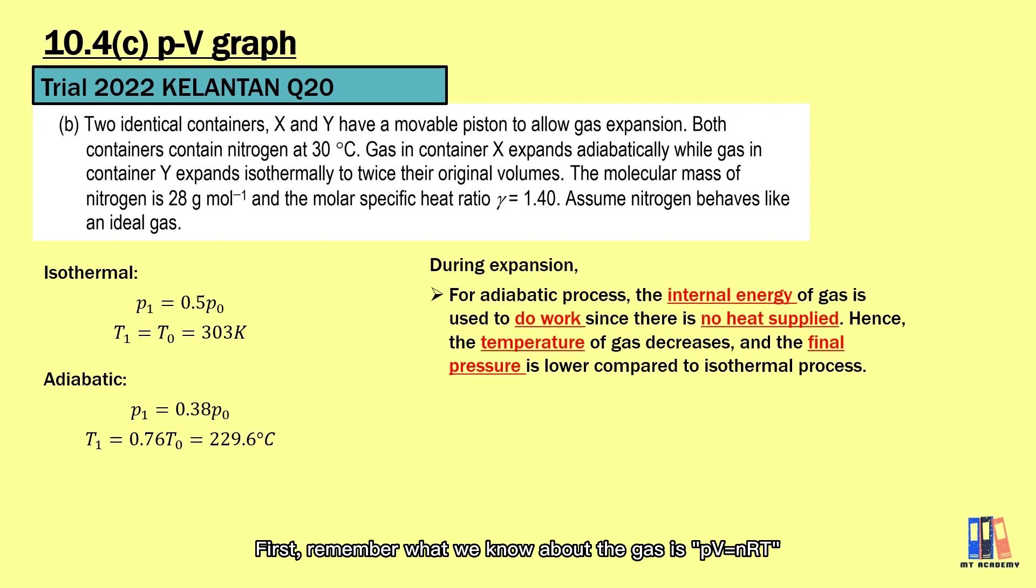First, remember what we can know about the gas is PV equal to nRT. The major variable would be the pressure, volume, and temperature. Depending on what type of the process is involved, we need to know what is the constant variable, what is the effect, what is the relationship or the equation, and what is the result or conclusion.